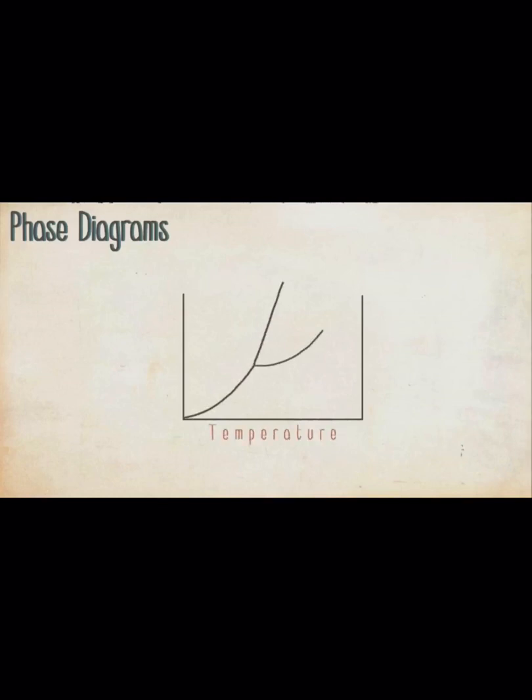A typical phase diagram looks like this. The x-axis represents temperature and the y-axis represents pressure. As you might expect, the stable state at low temperature and high pressure is the solid state. The stable state at high temperature and low pressure is the gas state. And the stable state in between these two regions is the liquid state.